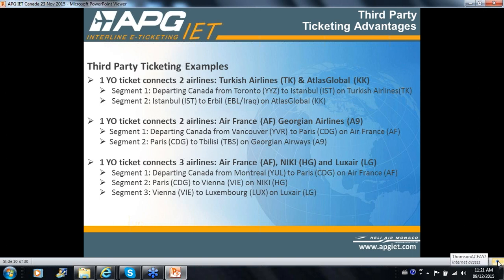As previously mentioned, you can ticket non-BSP airlines that you might not normally be able to issue. Also, the YO ticket comes with specific insurance protection in case of airline insolvency or a denied boarding scenario — those details are described in greater length on the website. In addition to straightforward one-carrier ticketing, the interline ticketing benefits can also be extended to second-party ticketing and third-party ticketing. Let's take a closer look at how this works.